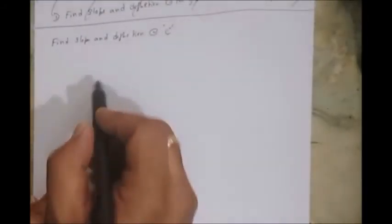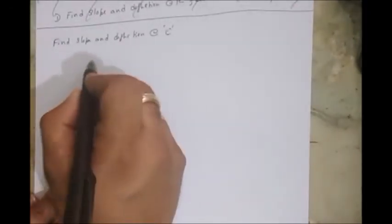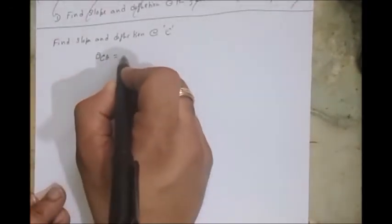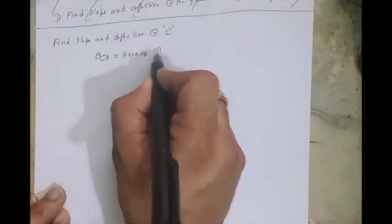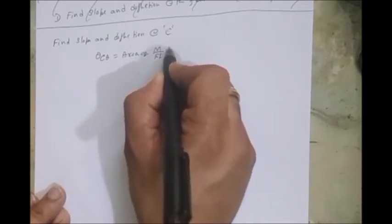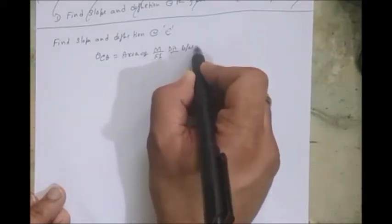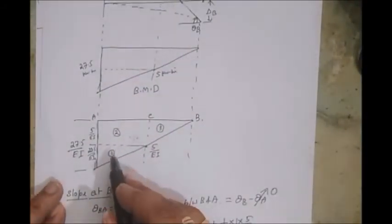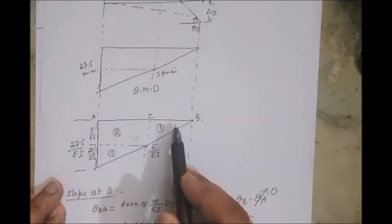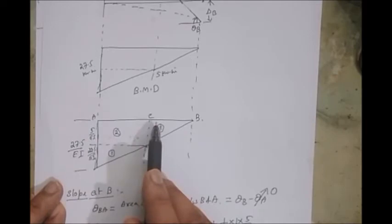Let's take the reference as A. Then slope at C, theta C A, is equal to area of M over EI diagram between A and C. In this case we have to consider only the two regions, there is region 1 and 2. We don't have to consider this one.